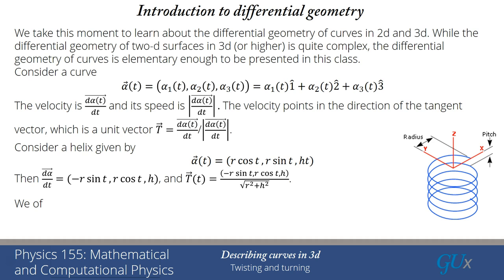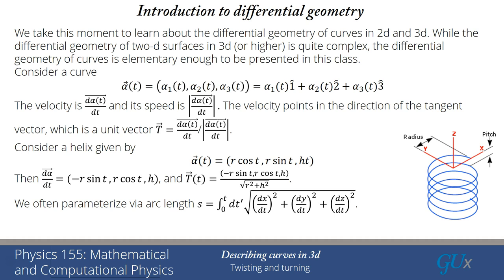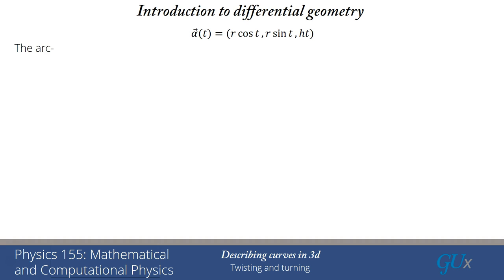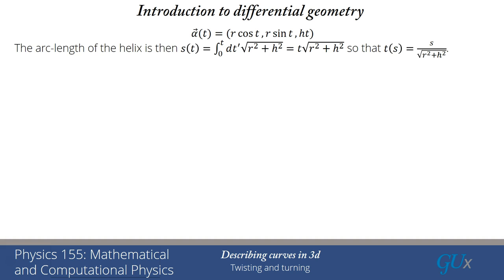We've talked about arc length before. If we parametrize the curve not in terms of time but in terms of arc length — computed by integrating the speed with respect to time — we have a unit speed curve, and then derivatives are automatically unit vectors. It's often very convenient to work in terms of arc length. For the helix, the arc length is the speed, square root of R squared plus H squared, integrated over time, giving T times that square root. So T of S equals S divided by the square root, and we substitute that everywhere to get the arc length parametrization.